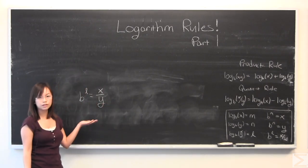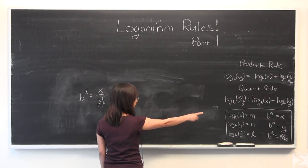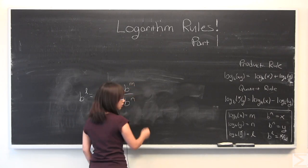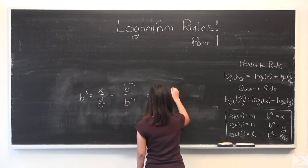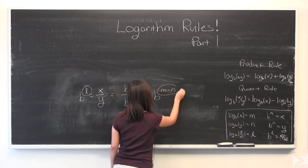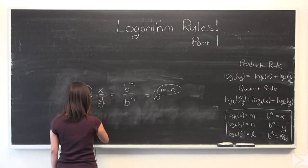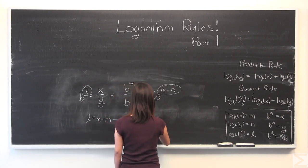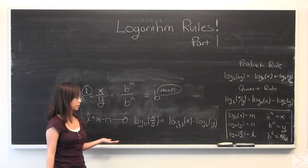b to the l is equal to x over y, because log rules and substitution. I'm going to substitute back in x and y. I'm going to use a law of exponents. And as we can see here, l is necessarily equal to m minus n. These wouldn't be equal unless those exponents are equal. Substitute everything back in. And we've just proven the quotient rule.